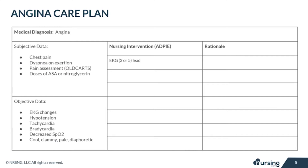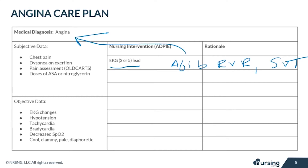Nursing interventions are such an important part of a care plan. Bedside EKG monitoring, three or five lead, is critical to see if the patient has any arrhythmias, because arrhythmias like AFib with RVR, SVT, and also bradycardia commonly cause angina.